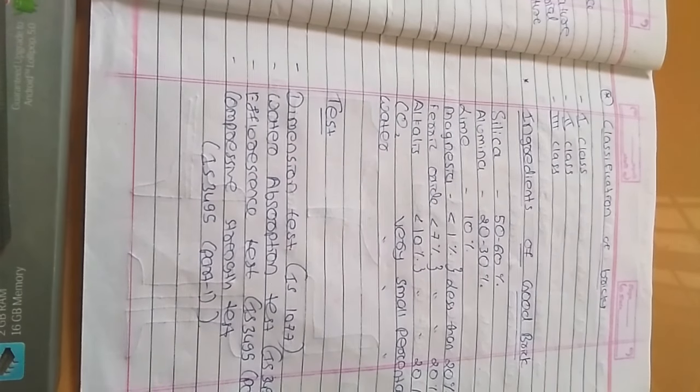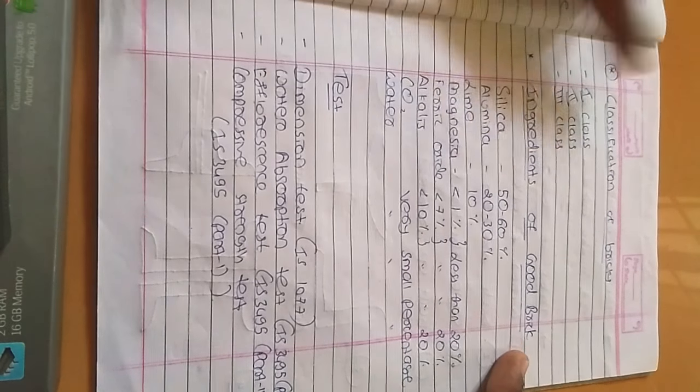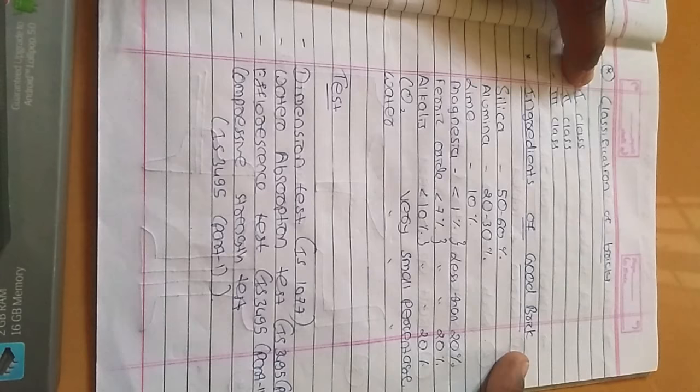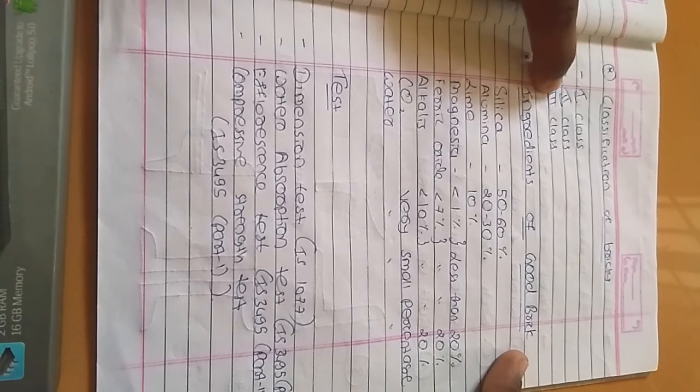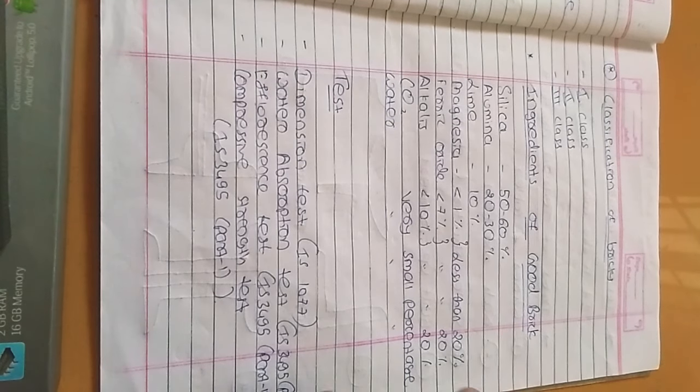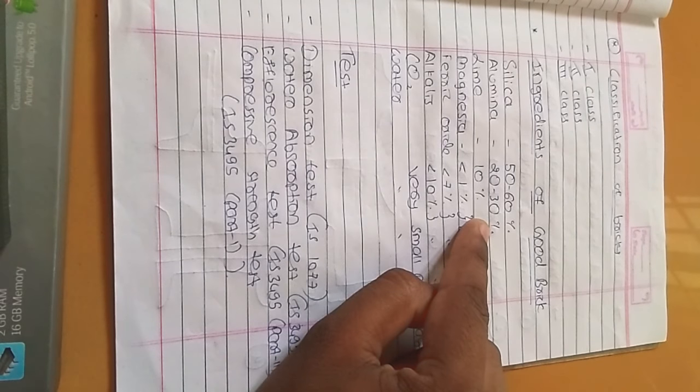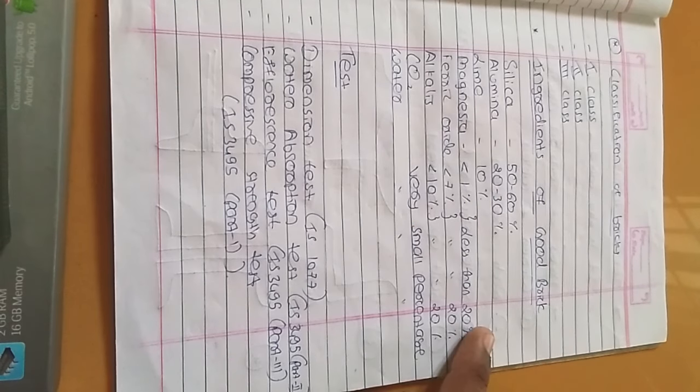Steel is classified according to their strength and contents. Now ingredients of good bricks. The first class brick - they are very red in color, they have a nice standard size.